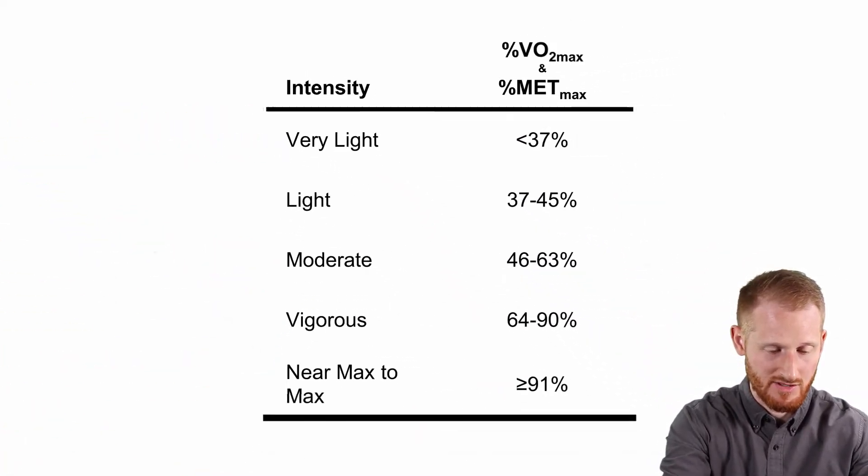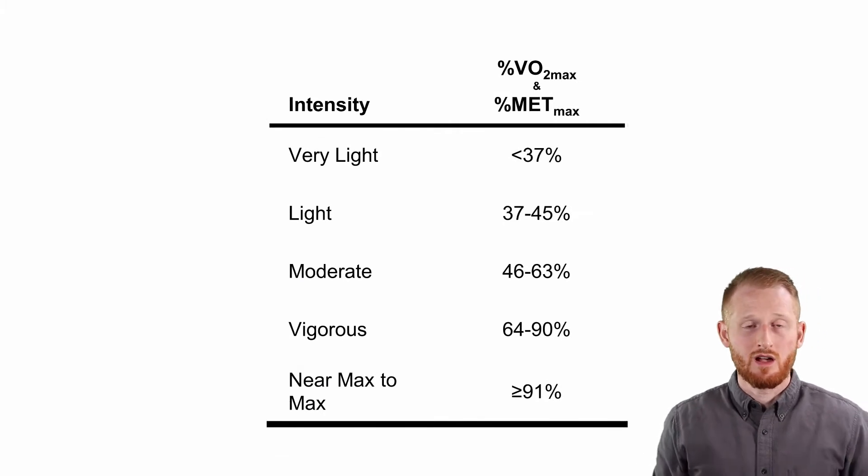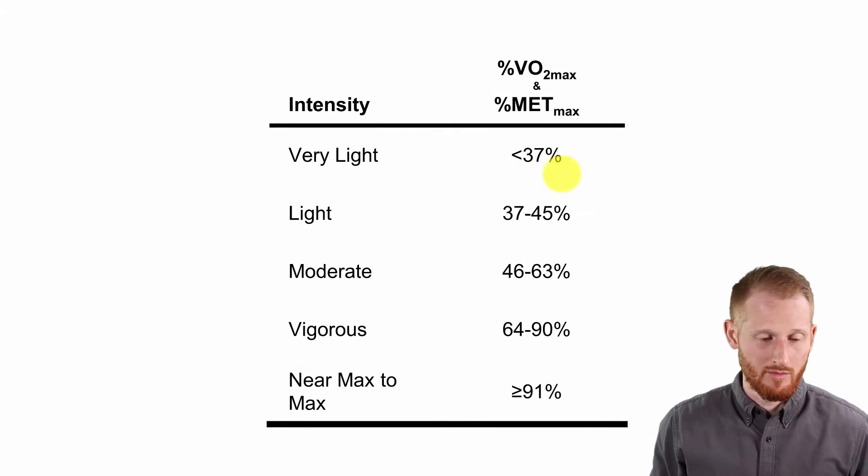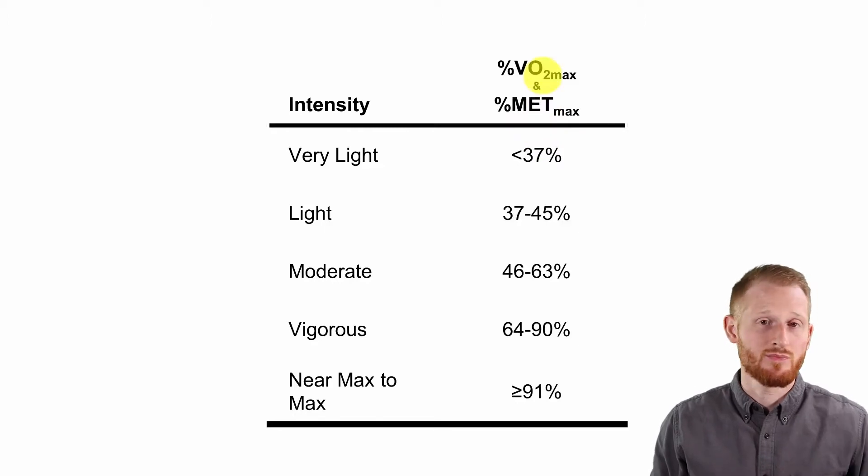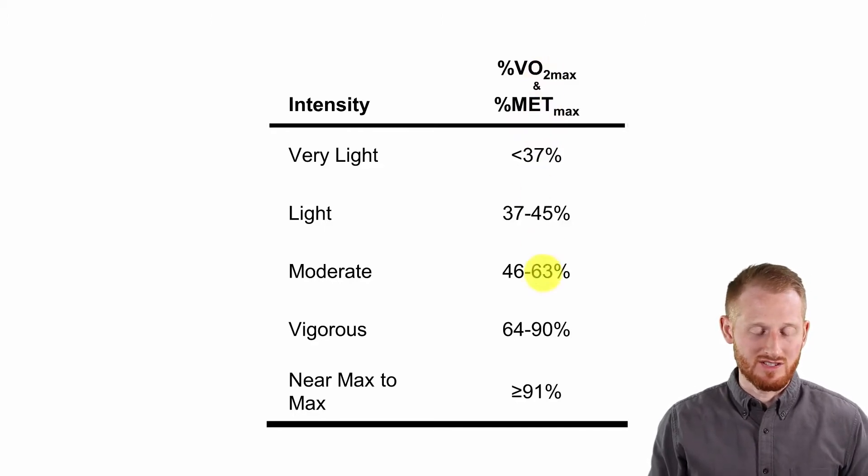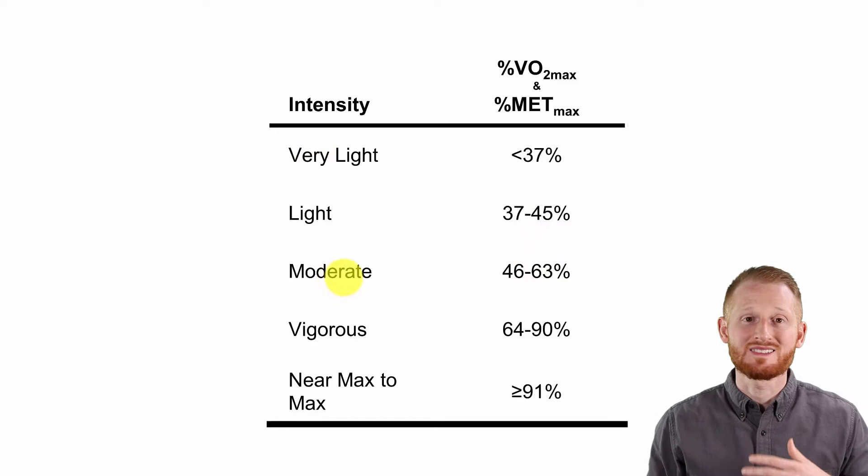This is information from the American College of Sports Medicine where we have the exercise intensity category and the percentage of VO2 max and percentage of MET max. Since METs are just calculated from VO2 max, the percentages that are considered in these different categories is the same.